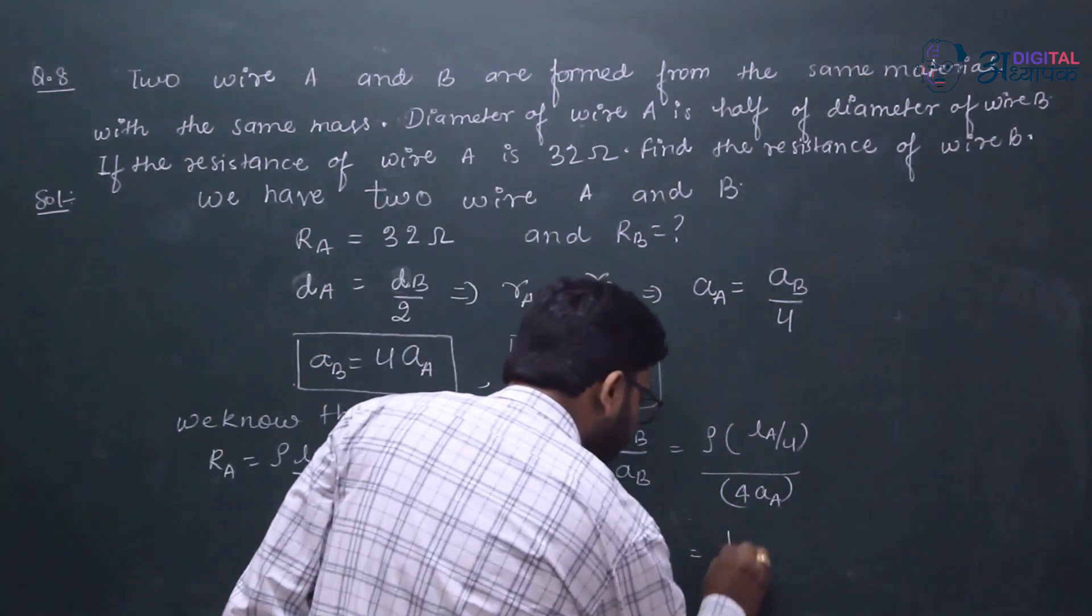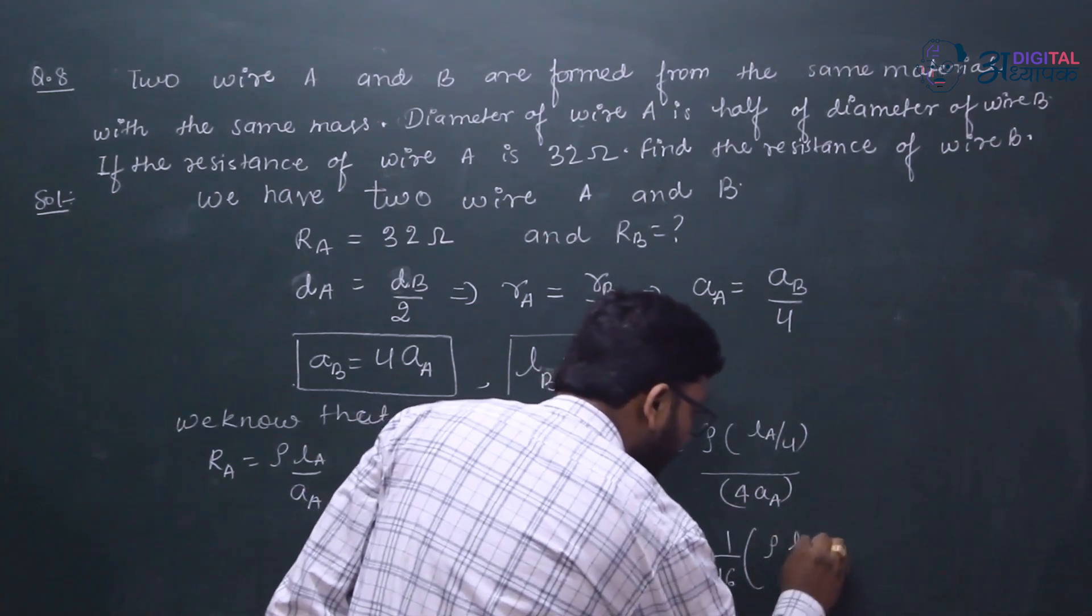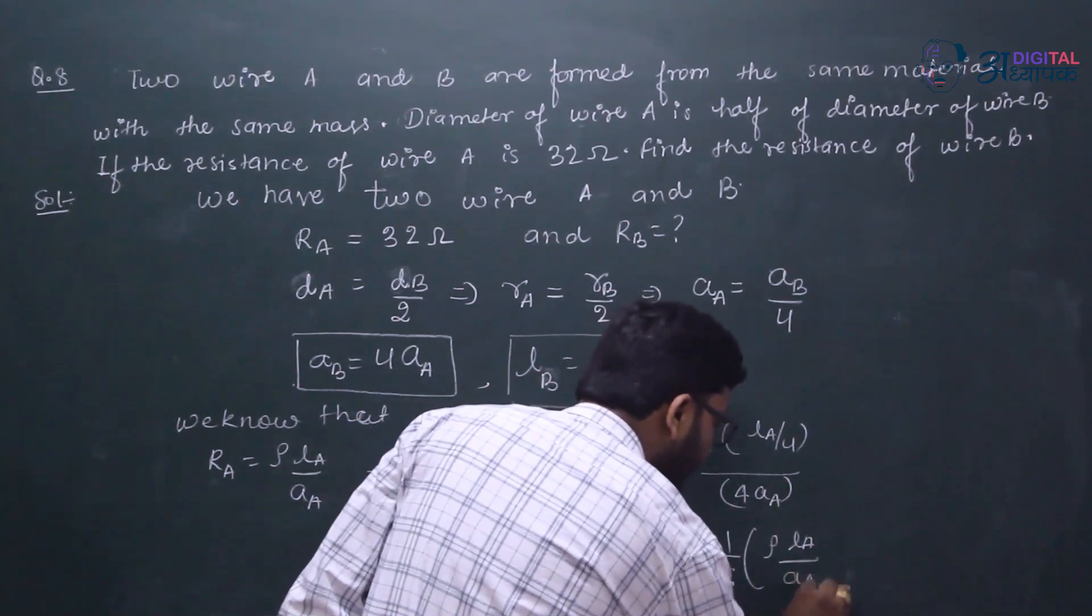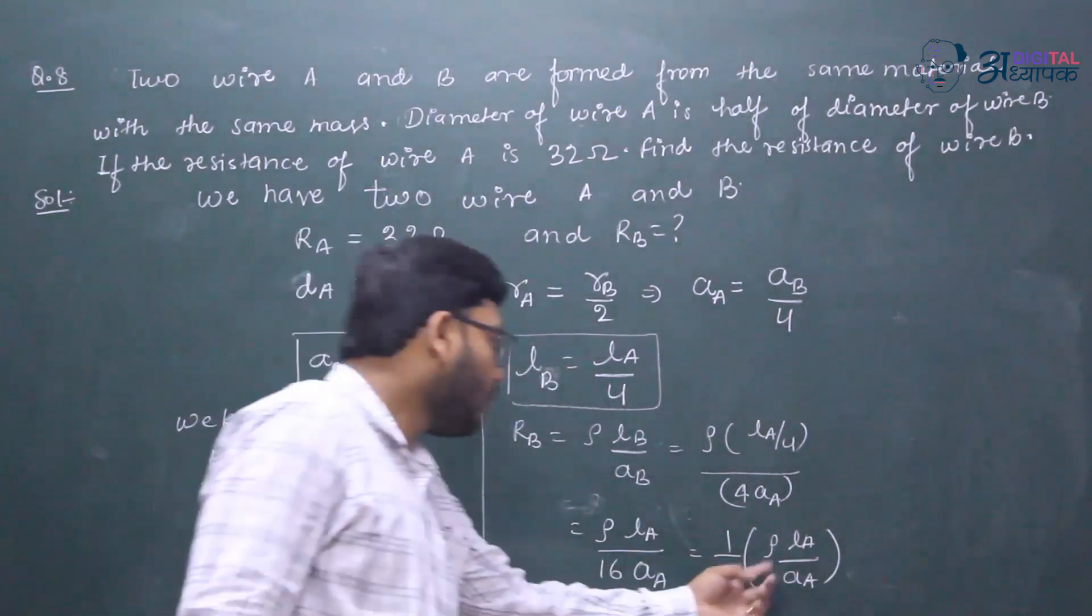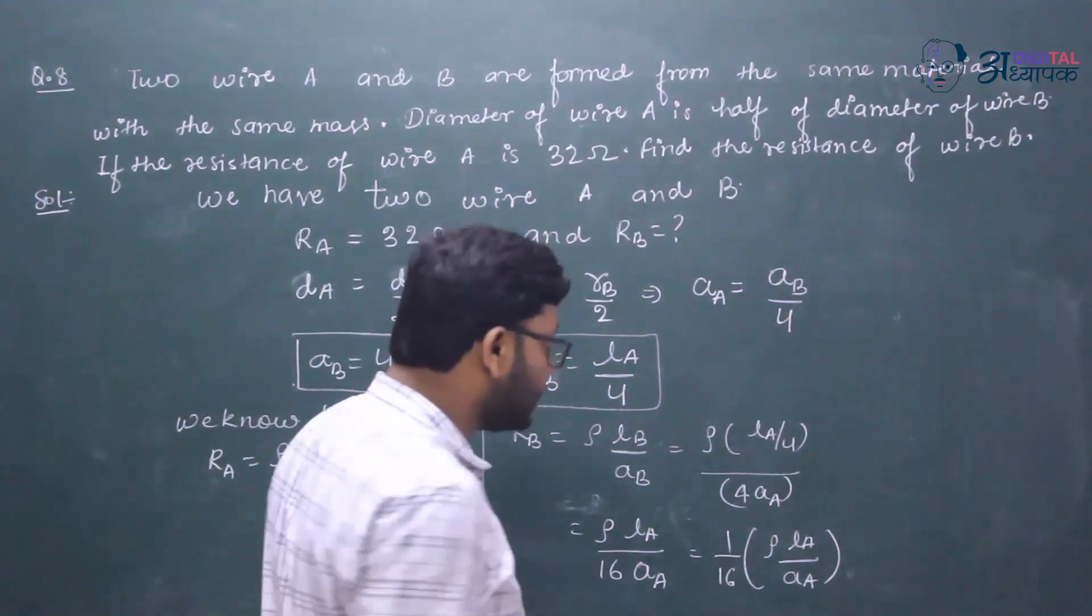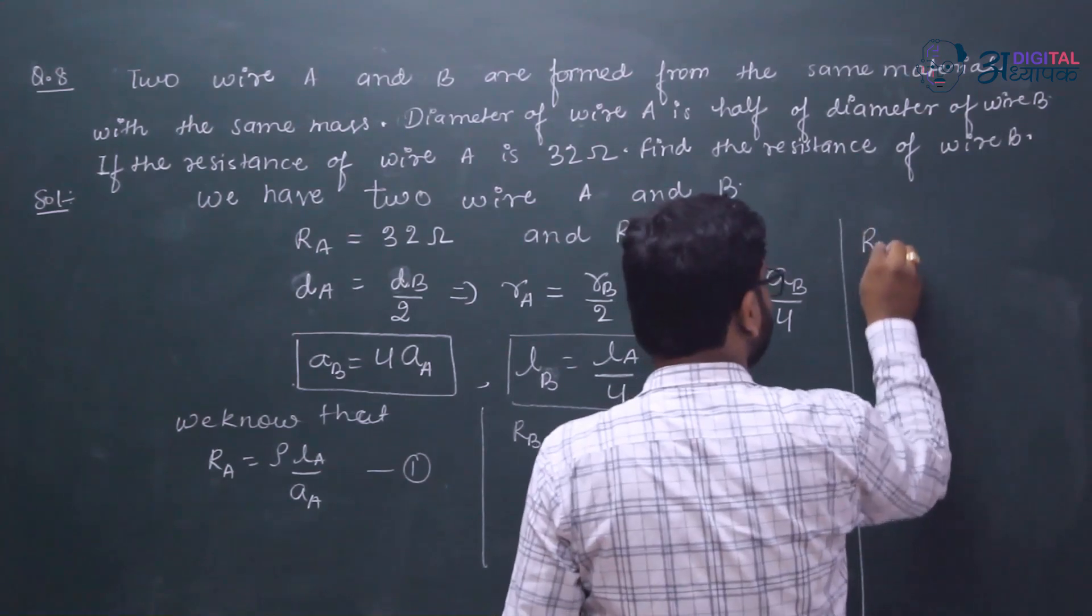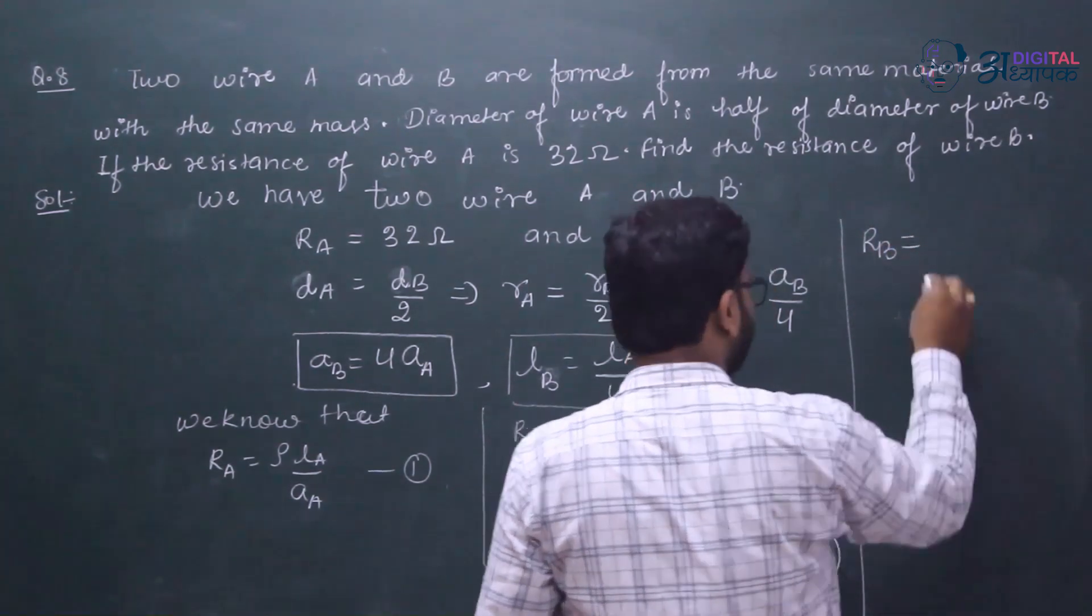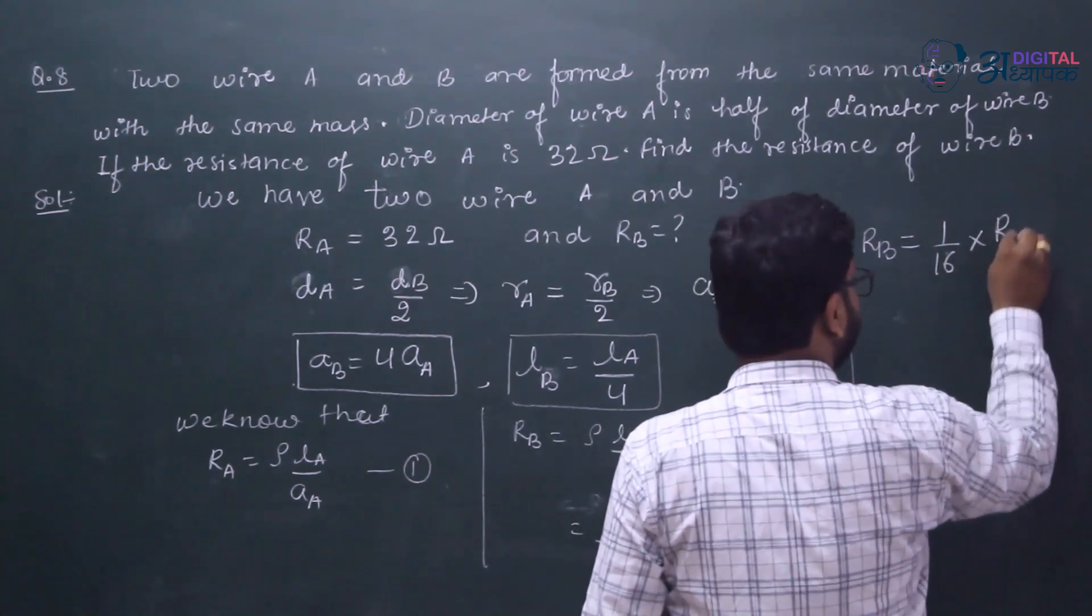If we change the value, 1 upon 16, ρLA upon AA. Now the equation ρLA upon AA is RA. Now we can write RB is equal to 1 upon 16 into RA.